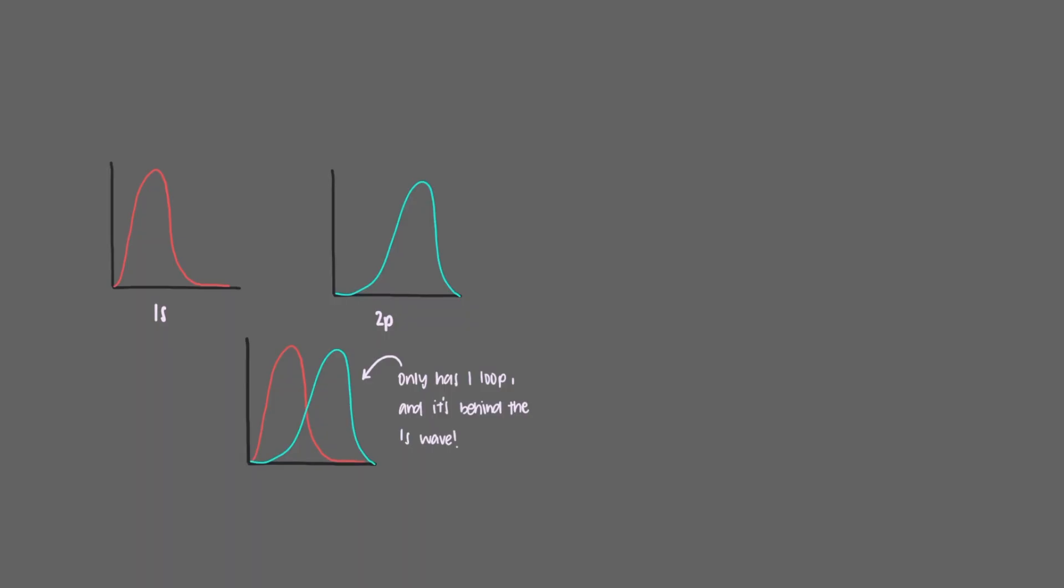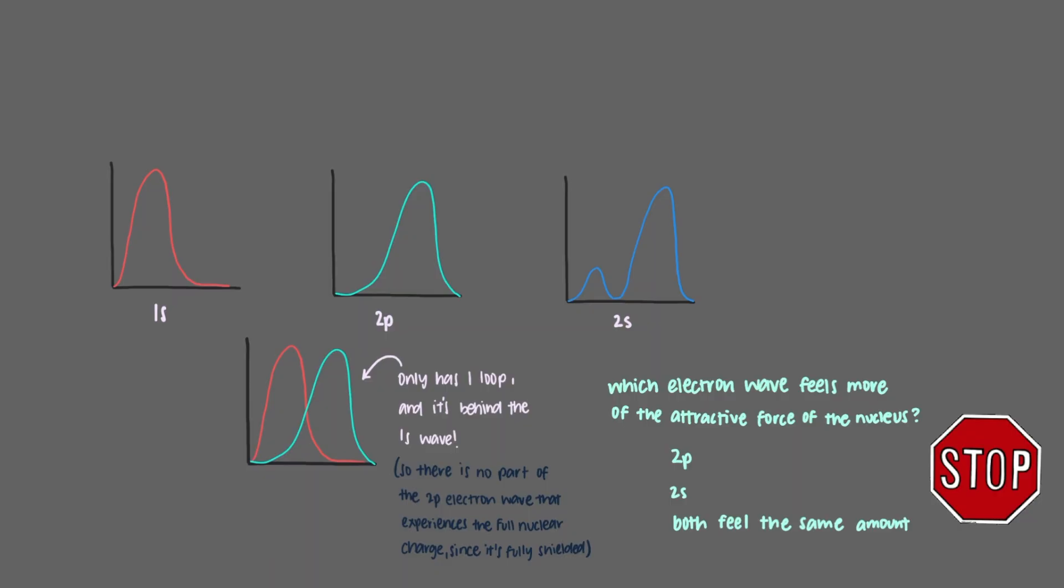Notice that the 2p electron wave only has the one loop, and it's behind the 1s electron wave. There is no part of the 2p electron wave that experiences the full nuclear charge because it is fully shielded by the 1s electron wave. So which electron wave feels more of the attractive force of the nucleus? 2p or 2s?